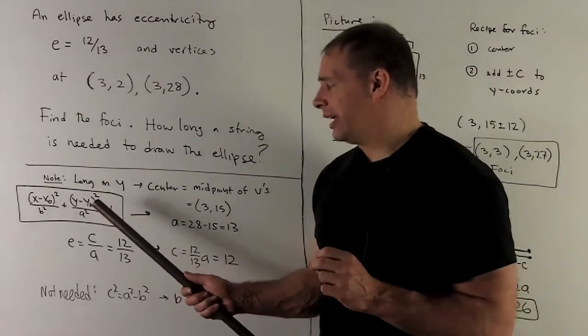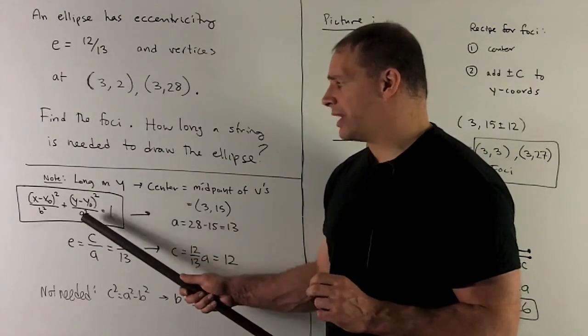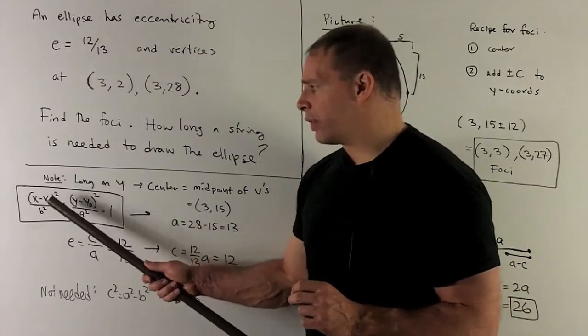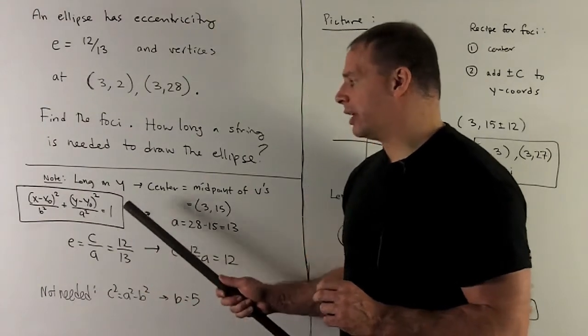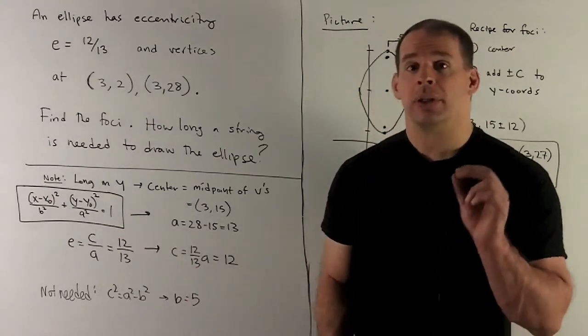Remember our standard equation here, since it's long in y, we'll have y squared stuff over a squared, x squared stuff over b squared, add it together, get a 1. So we have a equal to 13.